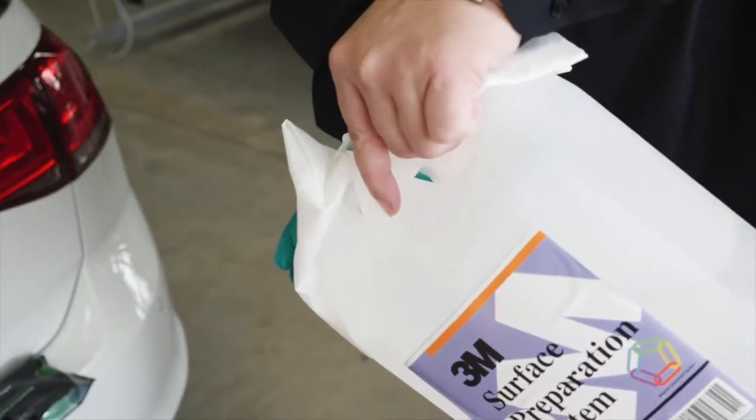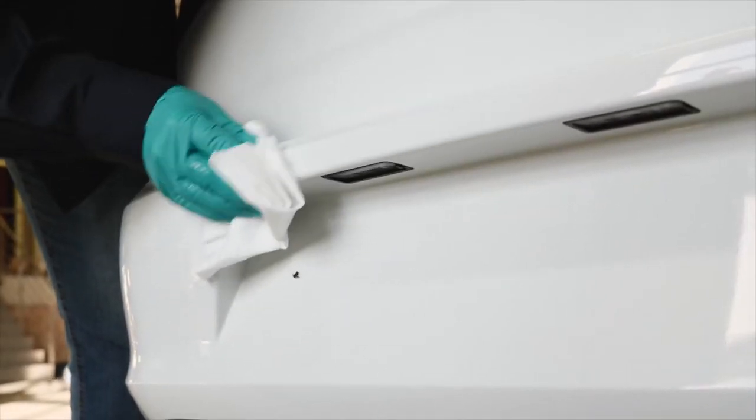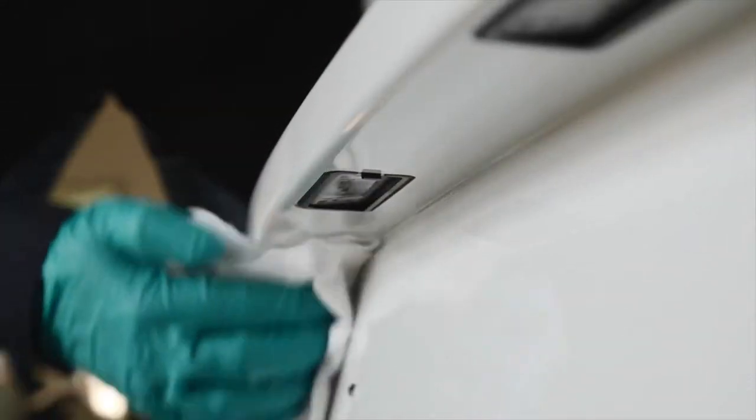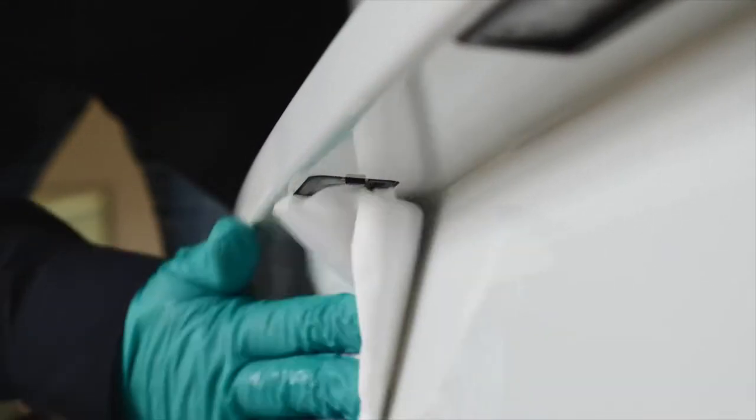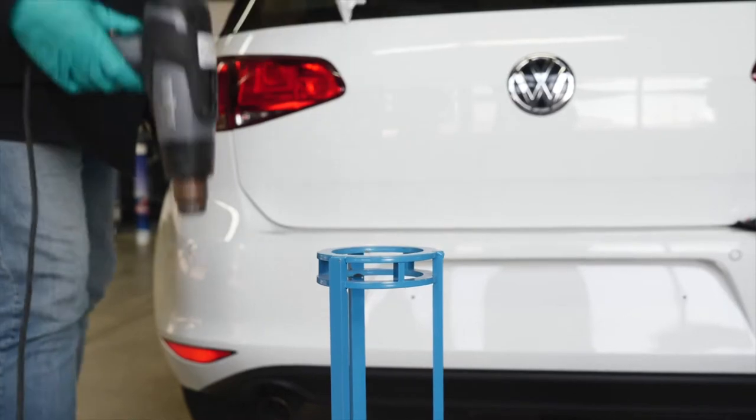For cleaning, pour a small amount of 3M Surface Preparation System onto a lint-free cloth and wipe smoothly inside the recess. Once cleaned, use a dry lint-free cloth to thoroughly dry the surface, making sure all solvents are removed. You can also use a professional heat gun to remove any final traces of solvent.